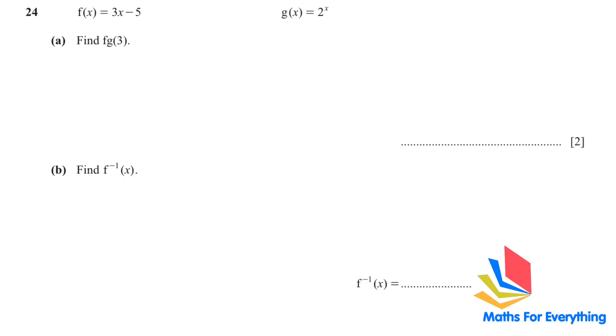Question number 24 is a function question. A, find f of g of 3. There are two ways to solve this. One, you can first find f of g. It means in place of x in f, we are going to put the g. So, f of g of x will be 3, 2 to the power of x minus 3. And f of g of 3 will be, in place of x, put 3. And this will give you 19.